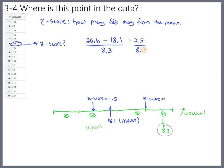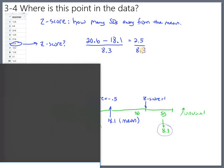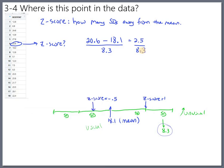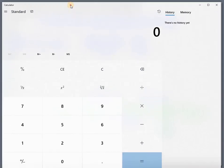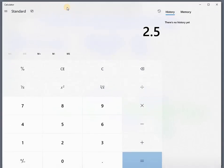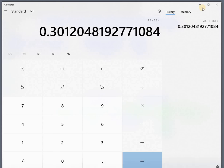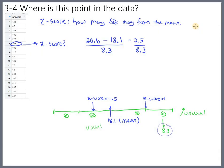So the rest of the z-score formula is to divide by the standard deviation. So we'll divide by the standard deviation. And this is the point where you grab your calculator. And let's see, we needed 2.5 divided by 8.3. So 2.5 divided by 8.3 is about .3. I'll just round to one decimal place. So this guy's z-score is .3, which means he's about .3 standard deviations above the mean.